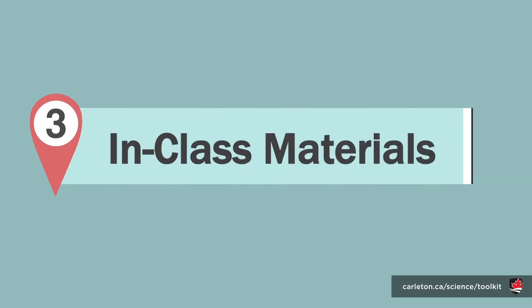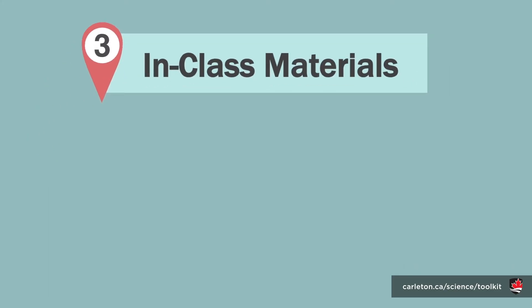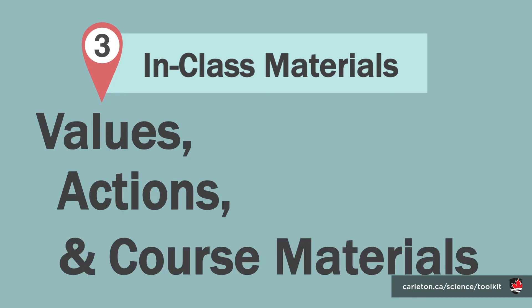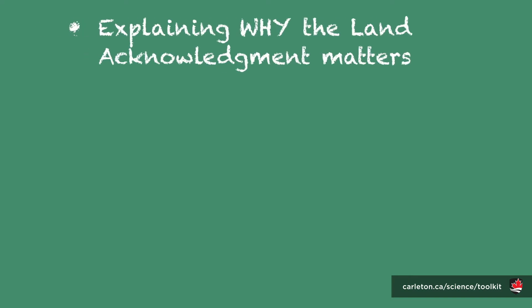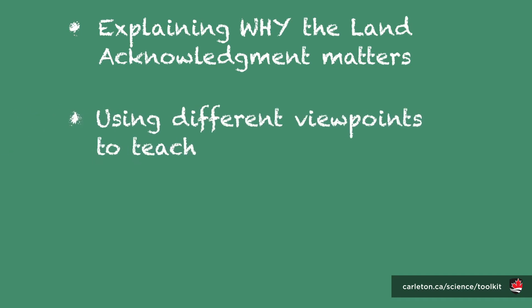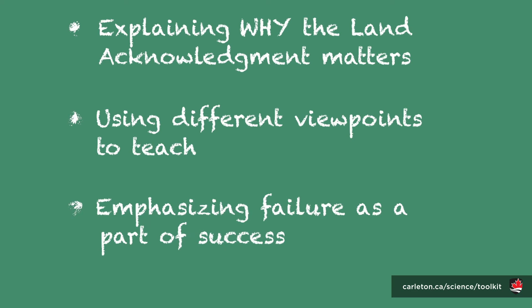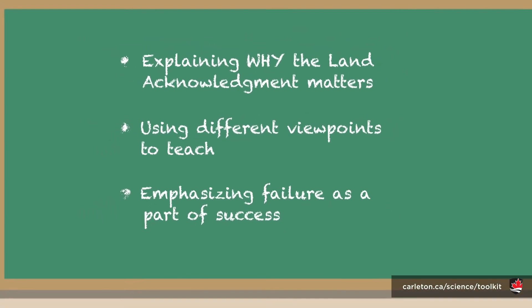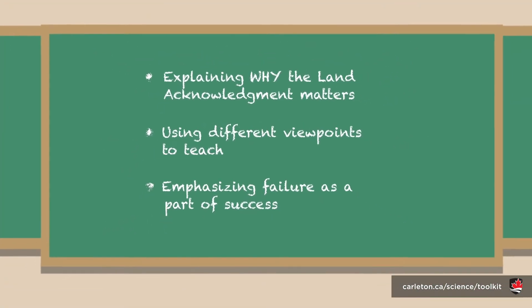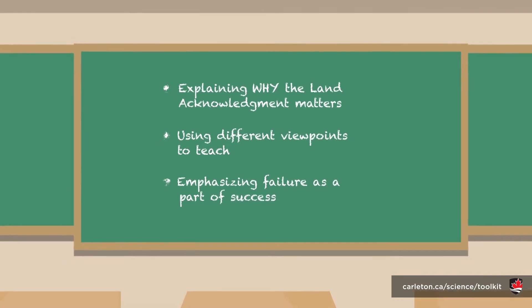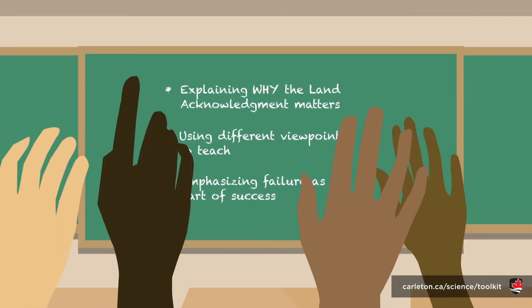Moving on to section three — this part of the toolkit is all about values, actions, and course materials within your classroom. The suggestions here are small things, like taking a moment after mentioning the land acknowledgement to explain to students why this is so meaningful, incorporating different viewpoints within your lectures, and even simply letting your students know that failure is a part of success and giving them permission to get things wrong. All of the actions listed in this part of the toolkit can make a huge difference in making students feel like they belong in your class, which in turn will lead to students wanting to fully invest themselves in whatever you are teaching.